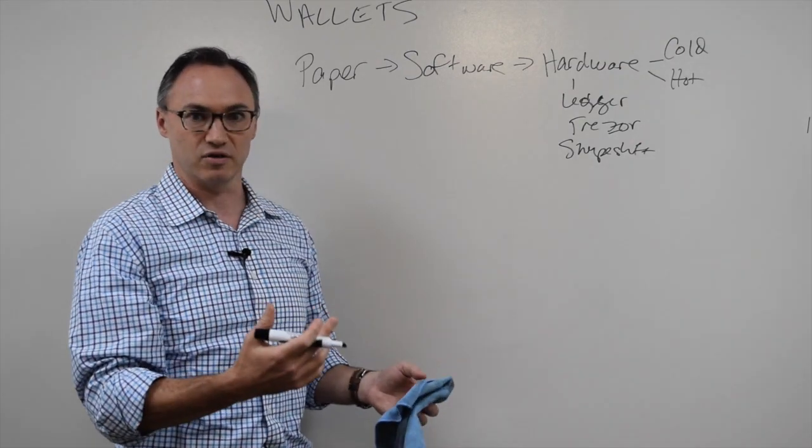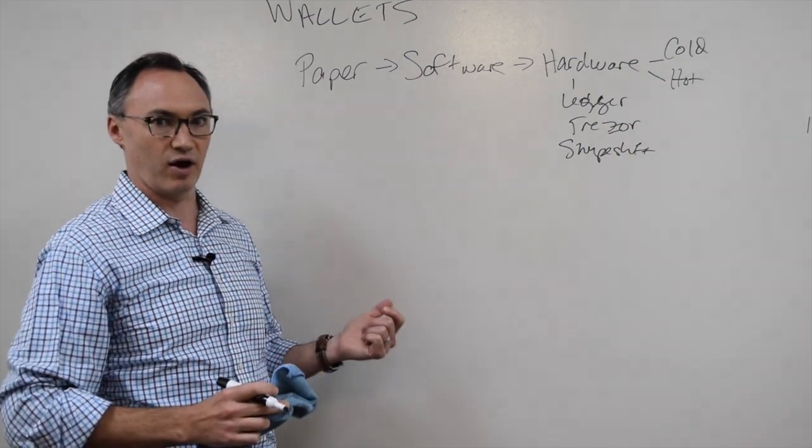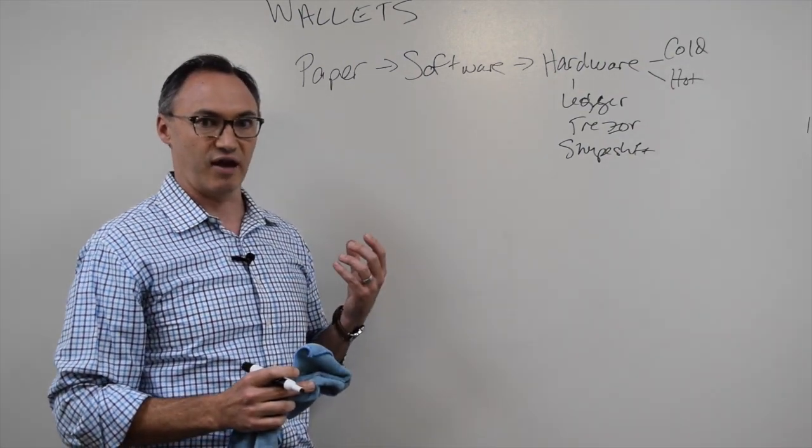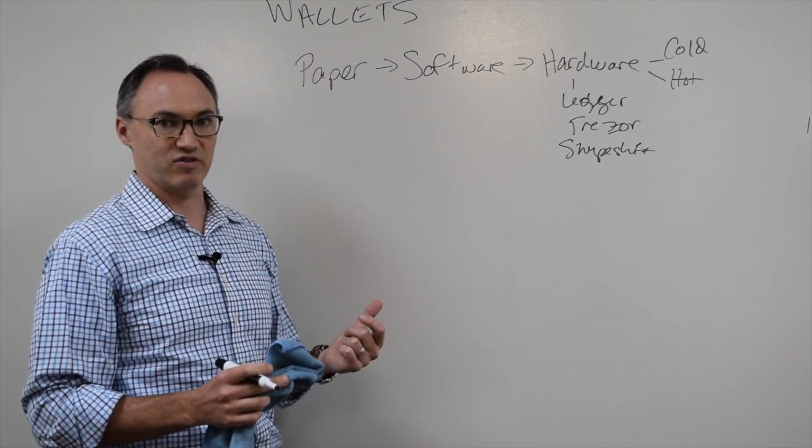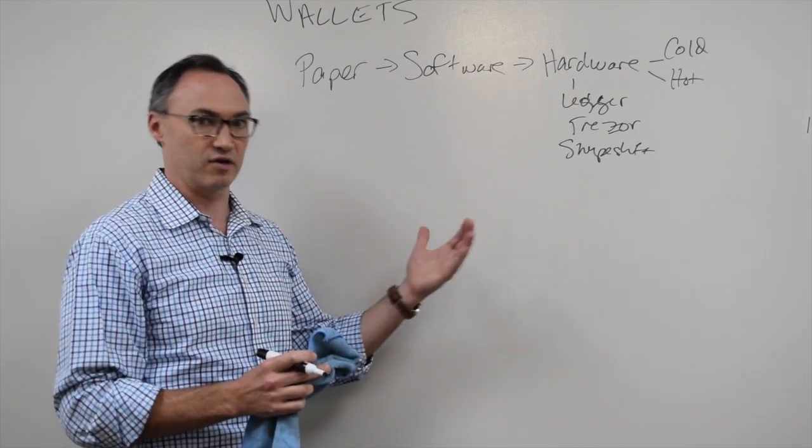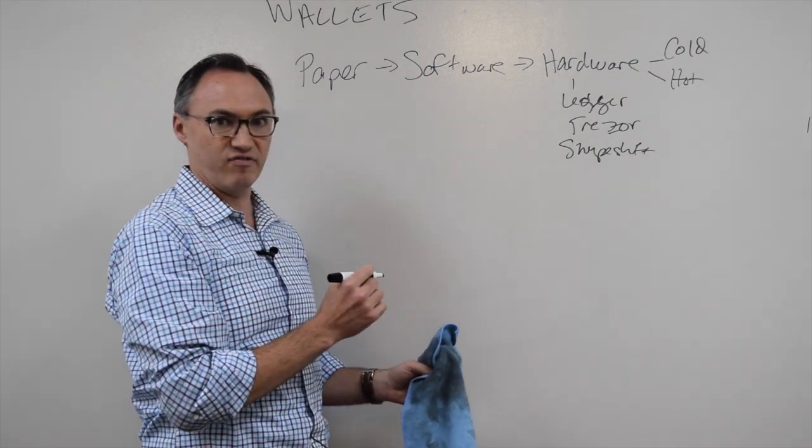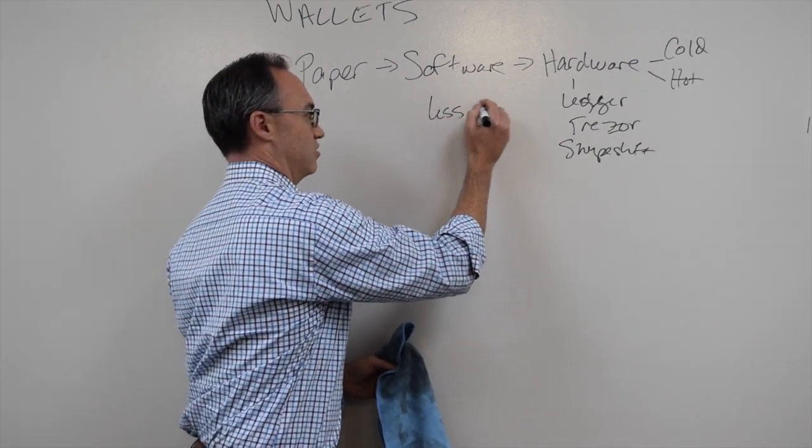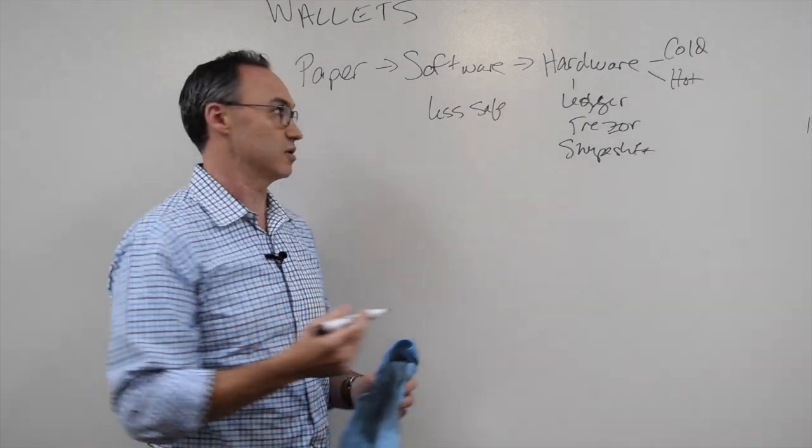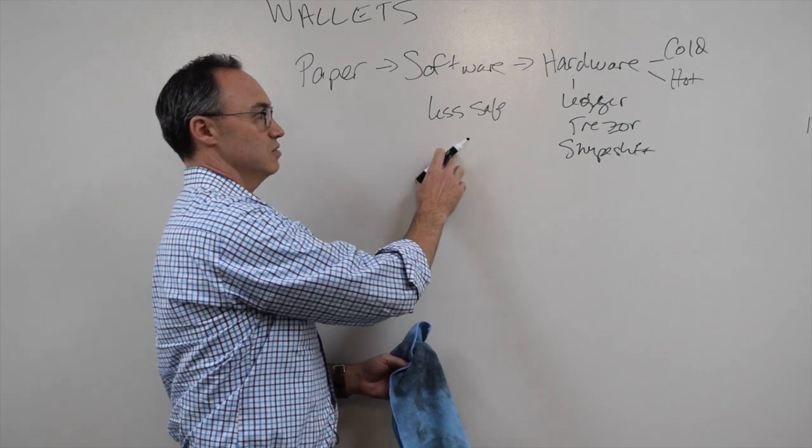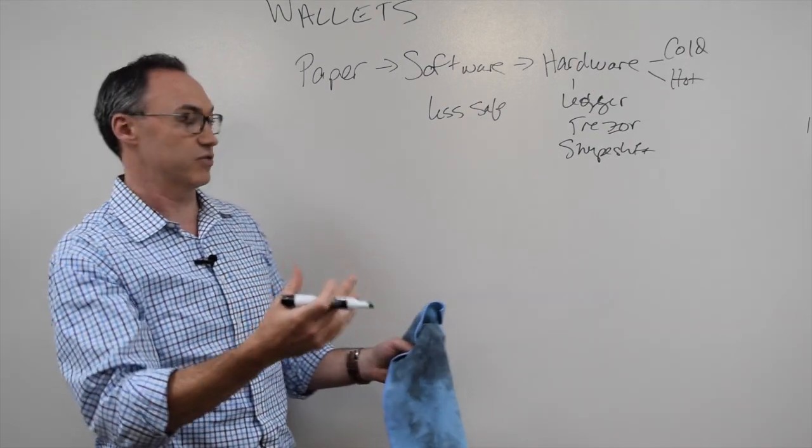Software wallets made it a lot easier. I can just log into a website potentially, put MetaMask on my browser. And as long as I have my password, my key to log into MetaMask, I technically don't have to keep my private key written down anywhere. I just have my password, I can log in and interact. Well, this is less safe from a hacking perspective because if someone hacks my laptop and it has a key logger or something like that, they can watch what I do. They can then sign my transactions and send themselves Bitcoin or Ether or whatever it might be.